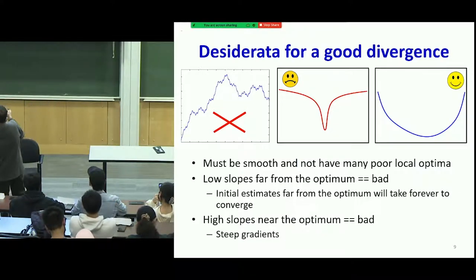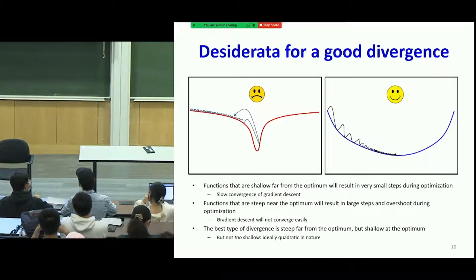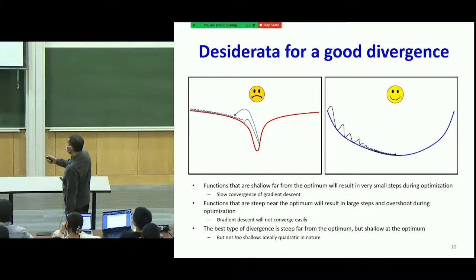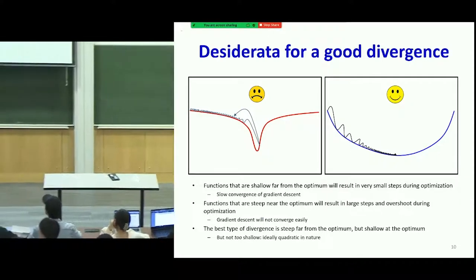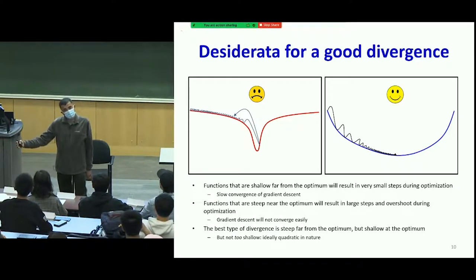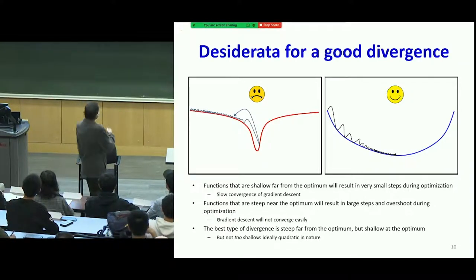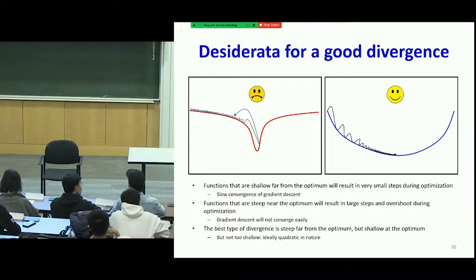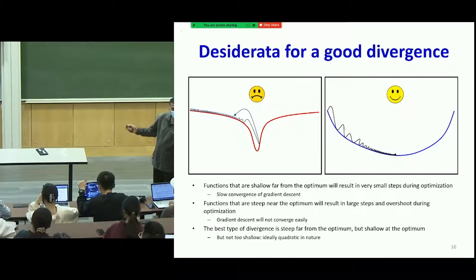You really want your divergence to have a high slope far away from the minimum and a small slope closer to the minimum. Functions that are shallow far from the minimum will result in very small steps in the early phases of optimization. And even worse, as you get close to the optimum, the function becomes steep, so step sizes become large. Gradient descent steps are proportional to the steepness itself, and that's likely to make the whole thing bounce and diverge. So although a flat-far/steep-near shape has a nice minimum, you're actually likely to have trouble finding it.